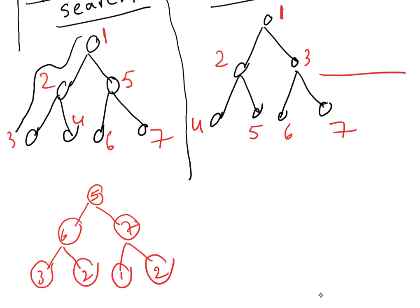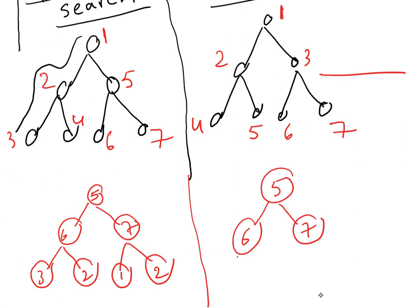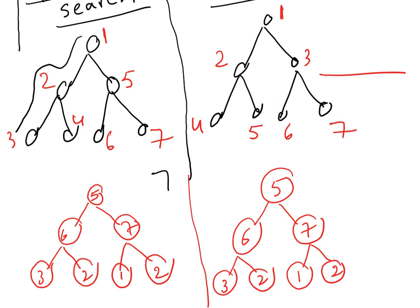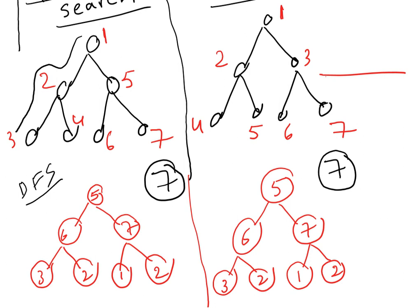There is no special rule here — I'm drawing the same tree on both sides. I want to find element 7. On one side I need to follow DFS and on the other side BFS.